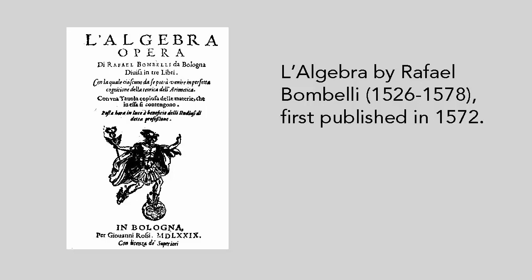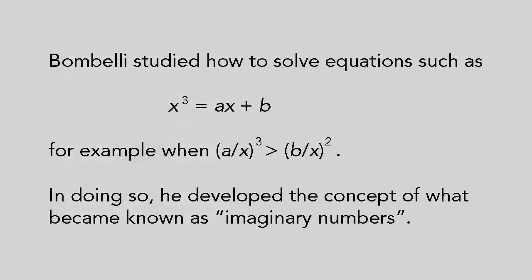But more importantly, he launched the study of what eventually became known as complex numbers by considering solutions of equations such as x cubed equals ax plus b in situations where a over x cubed is bigger than b over x squared. The only way to crack the equation in such a case is to allow the existence of something that's the sum of a real number plus the square root of a negative real number.